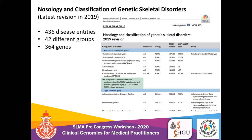The nosologic classification of genetic skeletal disorders is the most helpful classification, formulated in 1970 with several revisions. In its latest revision in 2019, 436 disease entities were identified, categorized under 42 different groups sharing a common molecular basis or pathway, with 364 disease-causing genes reported. For example, the FGFR3 chondrodysplasia group comprises thanatophoric dysplasia, achondroplasia, and hypochondroplasia. This is a very comprehensive but complex classification.